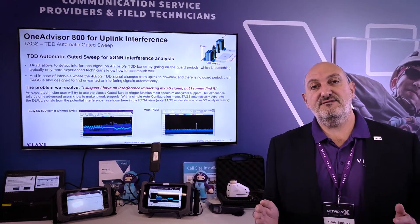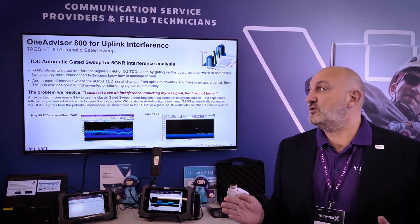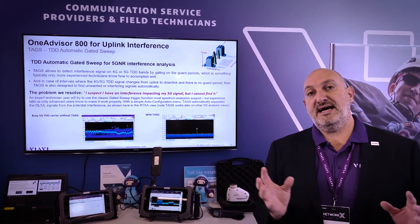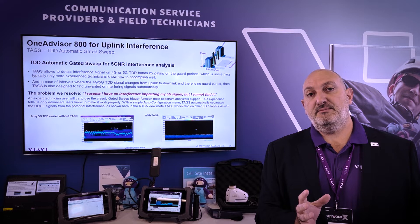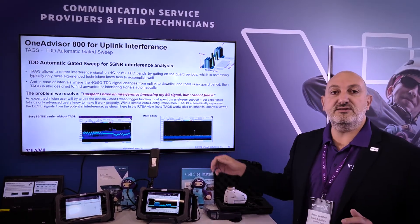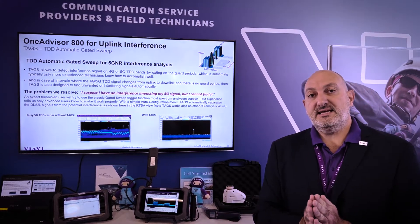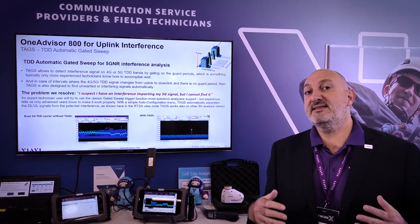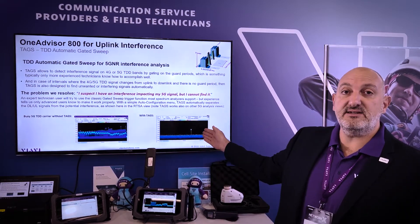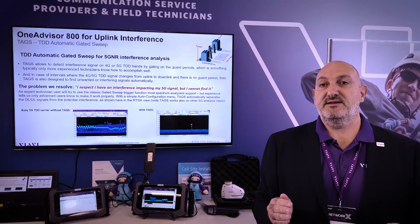Once we have automatically identified the time slot formats of that signal, we are able to gate on the uplink and remove that particular part of the carrier, leaving alone any possible external interference that might be impacting that signal. This is an ideal solution to automatically identify any particular external interference that may come into the uplink slot of your 5G signal.